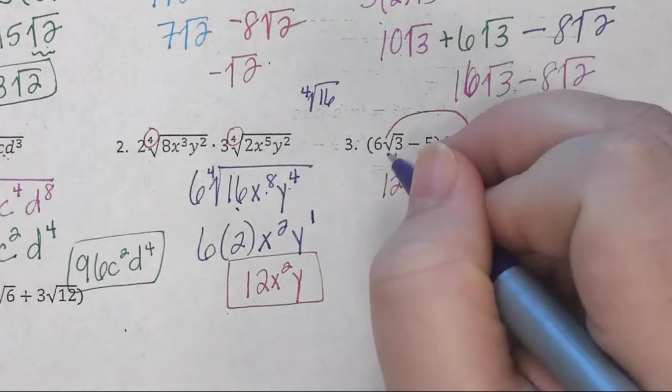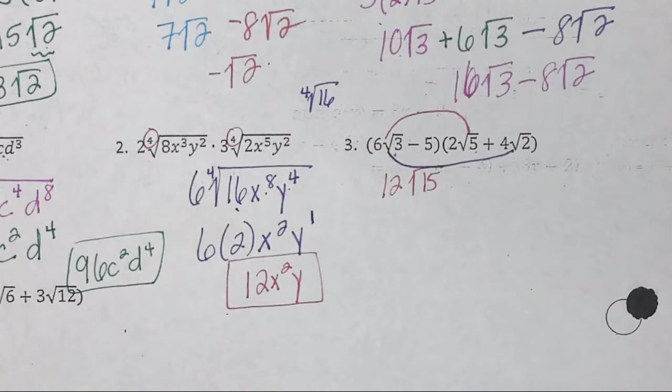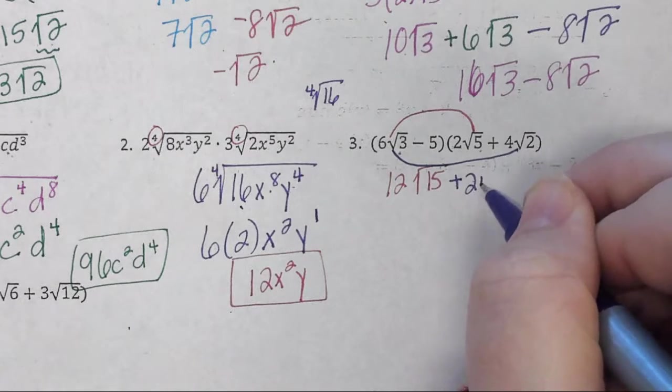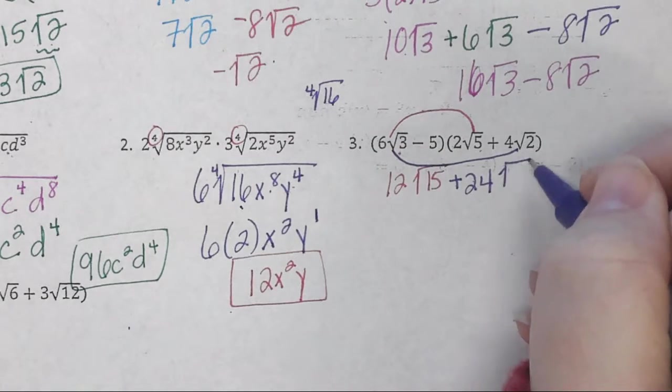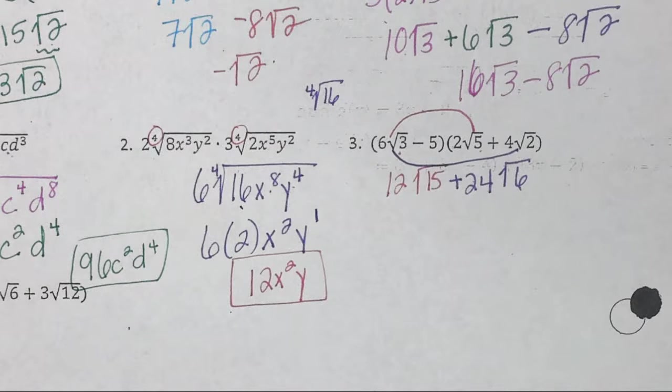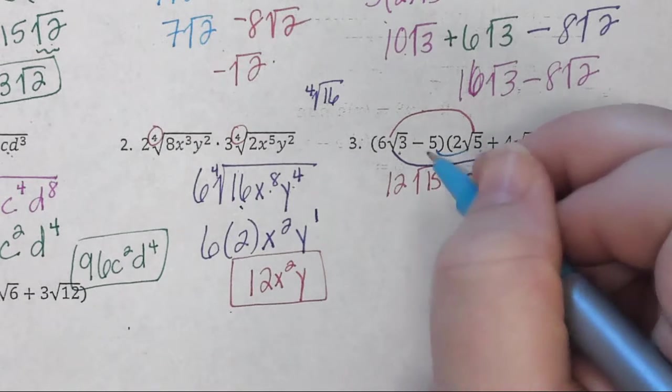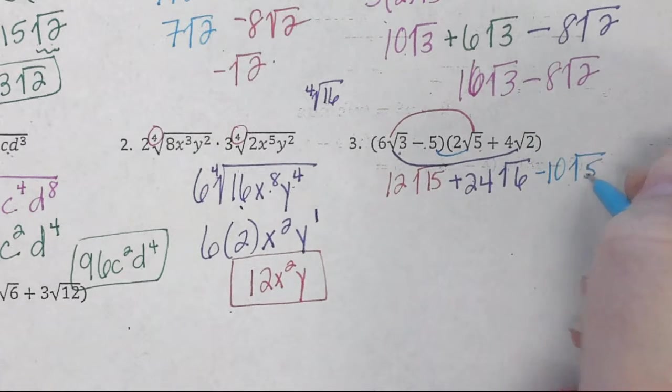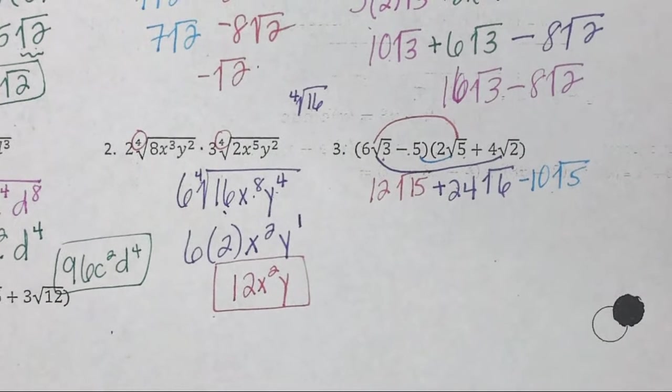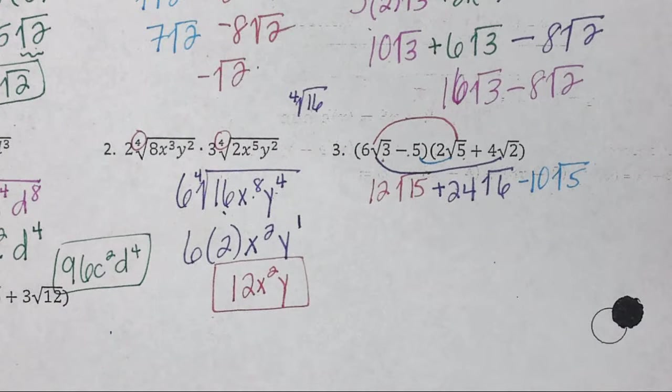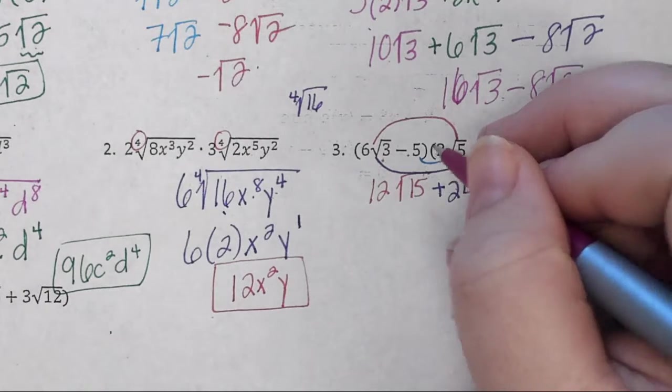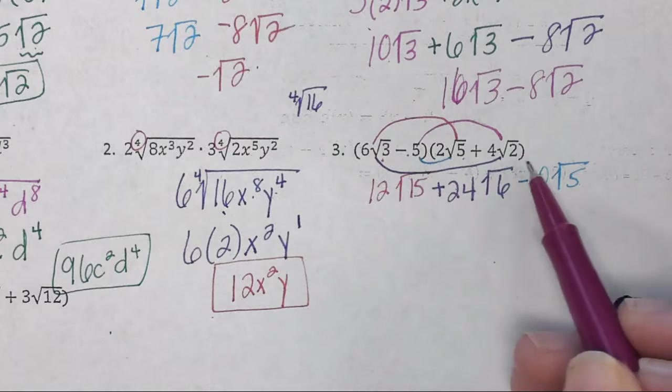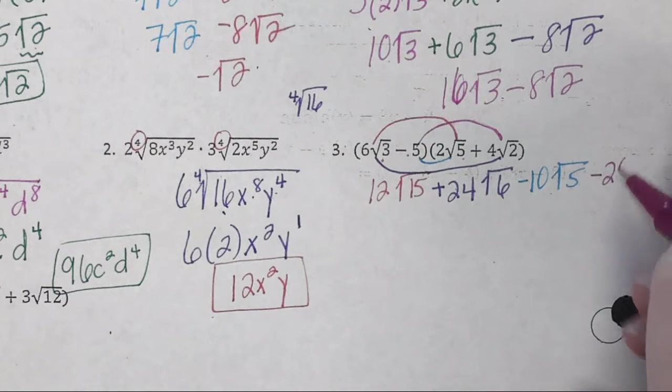And then outer, on the outside, 6 times 4, I get 24. Square root of 3 times square root of 2, I get square root of 6. Inner, negative 5 times 2, I get negative 10. And I just have the square root of 5, he doesn't have a friend I multiply him with. And last but not least, last, because they're the last terms in the two binomials. Negative 5 times 4, I get negative 20 square roots of 2.